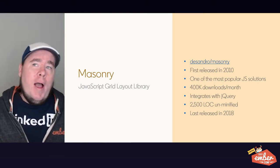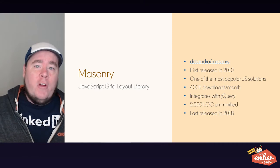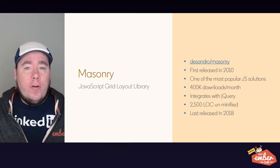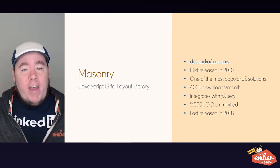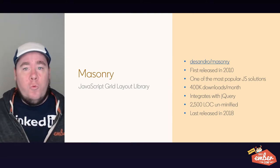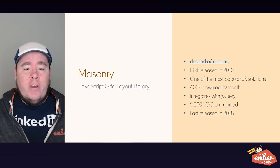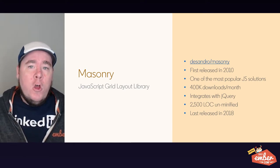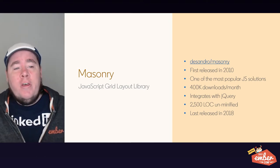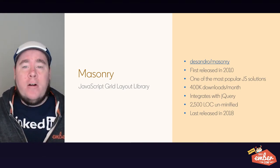So let's think about how we might implement a masonry layout. Many of you may know about the masonry JavaScript library found on GitHub at desandro/masonry. It was first released in 2010 and is one of the most popular JavaScript solutions for masonry layouts today, with over 400,000 downloads a month on NPM, partly due to its strong integration with jQuery. However, the library itself is 2,500 lines of code unminified, whereas the solution I'm going to show you today takes less than 150 lines to implement in Ember. Additionally, the masonry.js library was last released in 2018, so it hasn't received any modern updates.